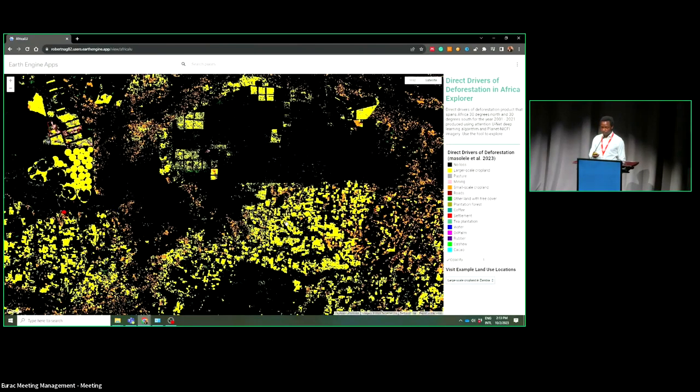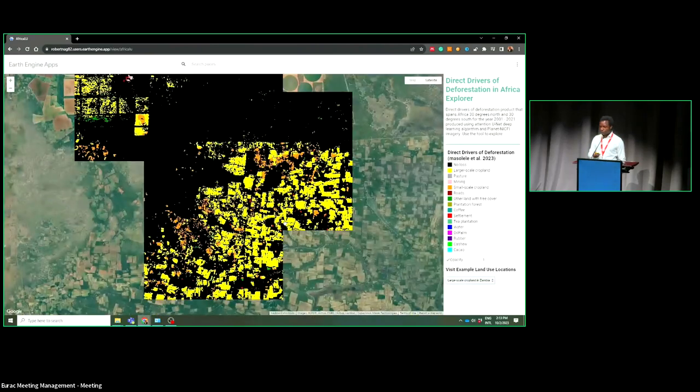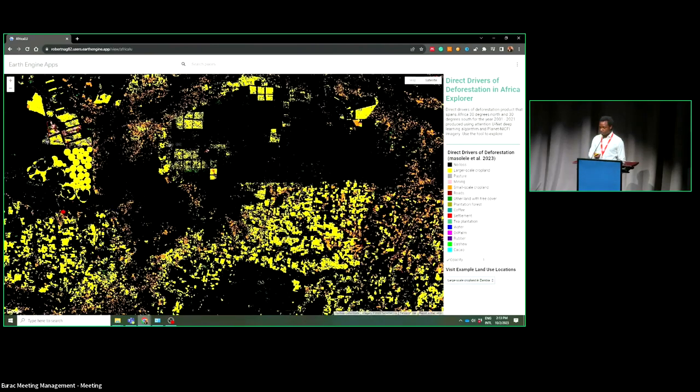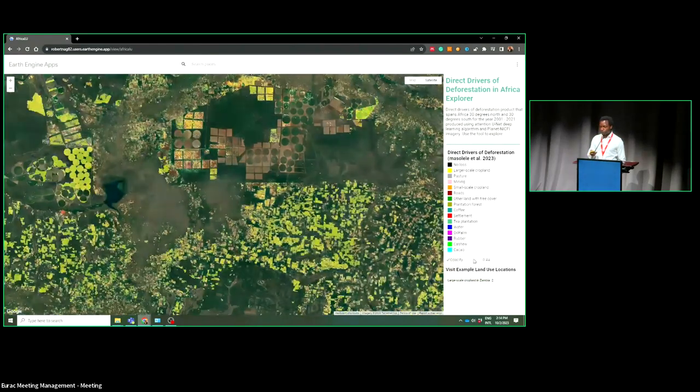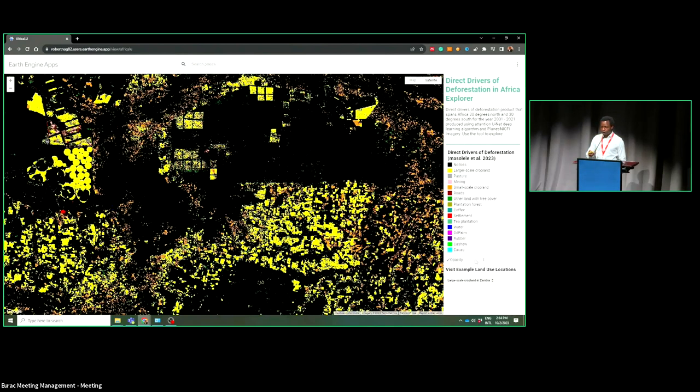We also identify large scale cropland. Basically, this is Zambia. This area is characterized by large scale cropland. But over time, the increase in farming because of large scale cropland and dry forest conversion has been increasing over time.